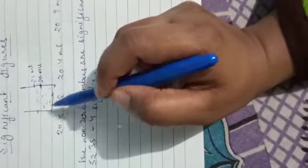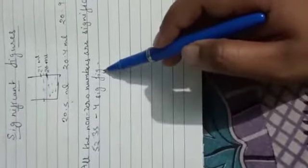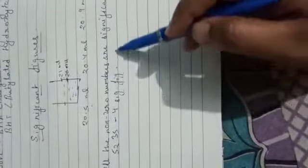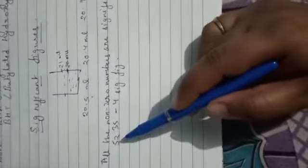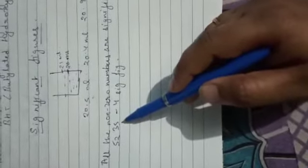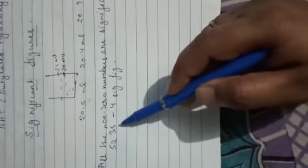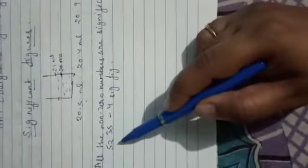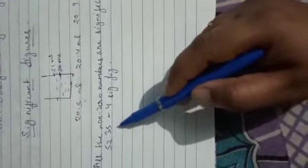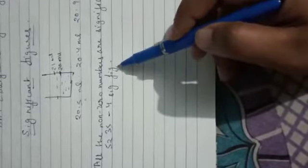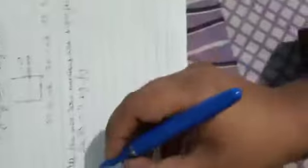There are a few rules for writing significant figures. The first rule is that all non-zero numbers are significant. For example, the number 5235 — if I ask how many significant figures are there, you count: one, two, three, four. All numbers are non-zero, so there are four significant figures in this number.